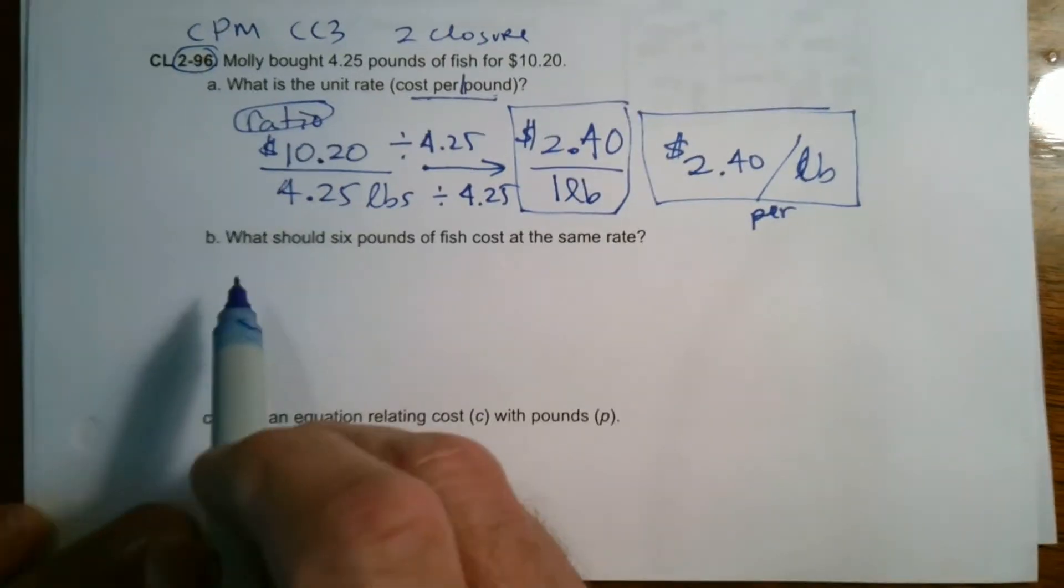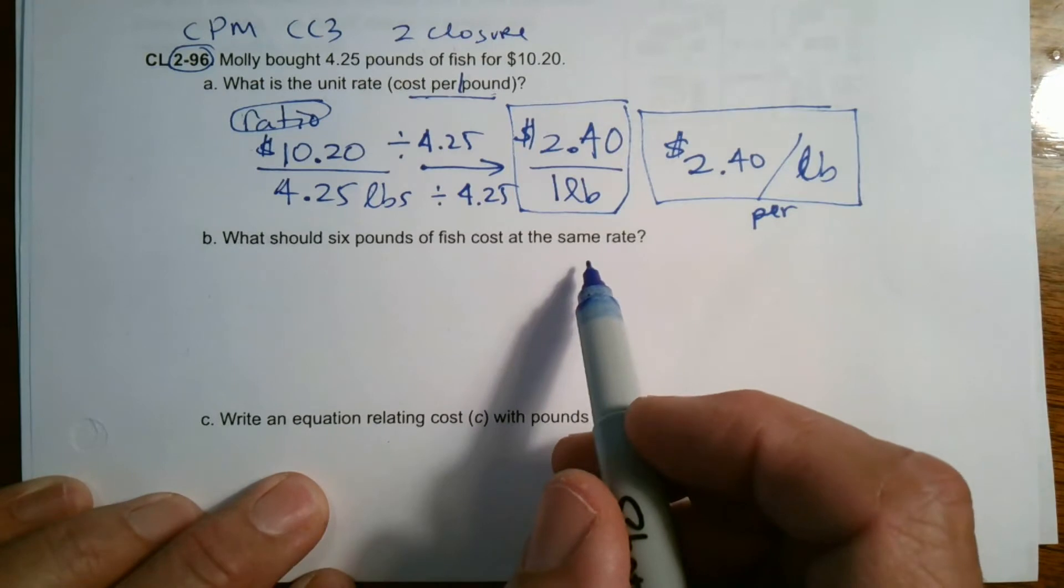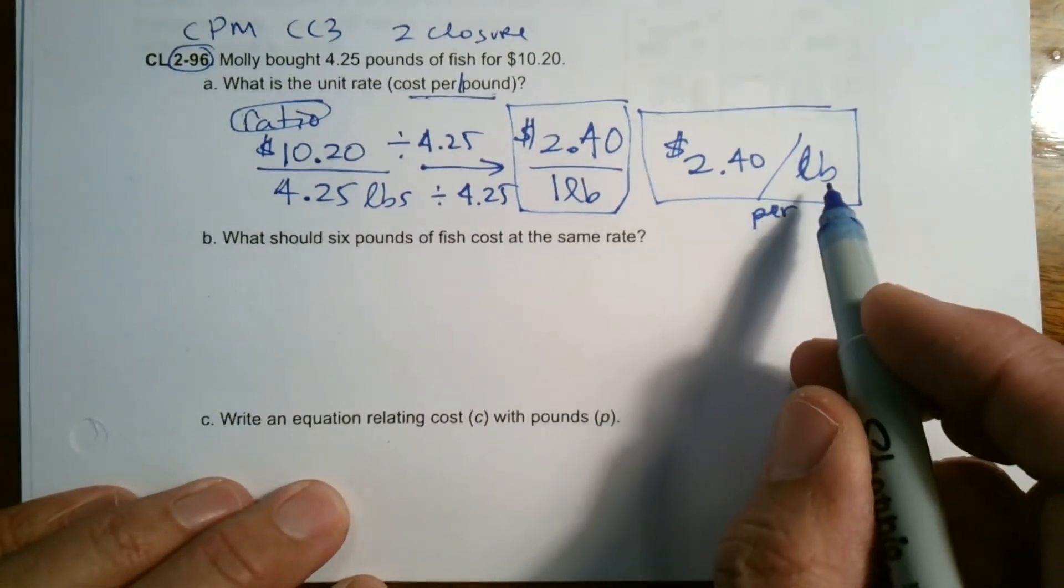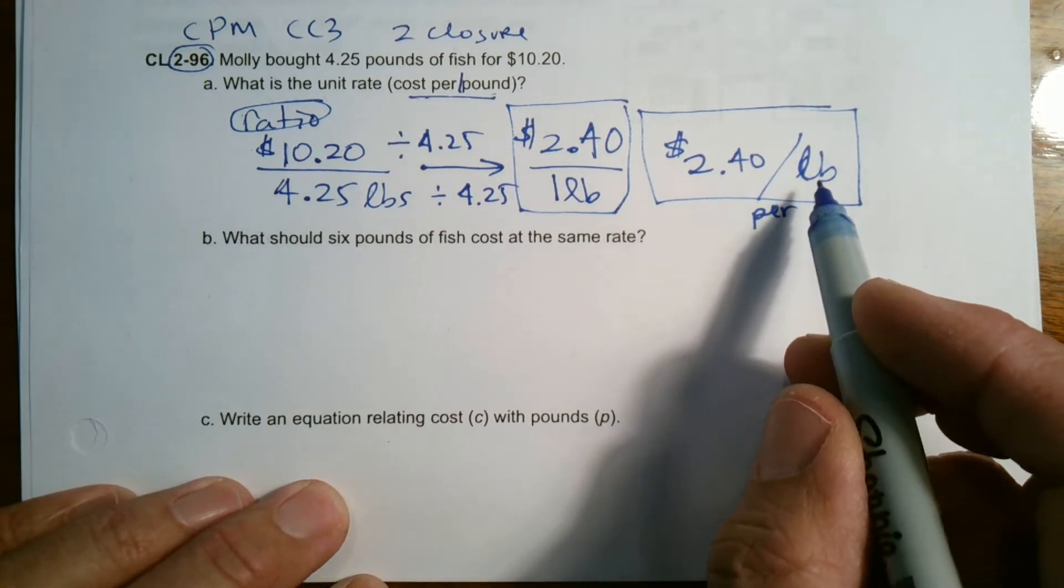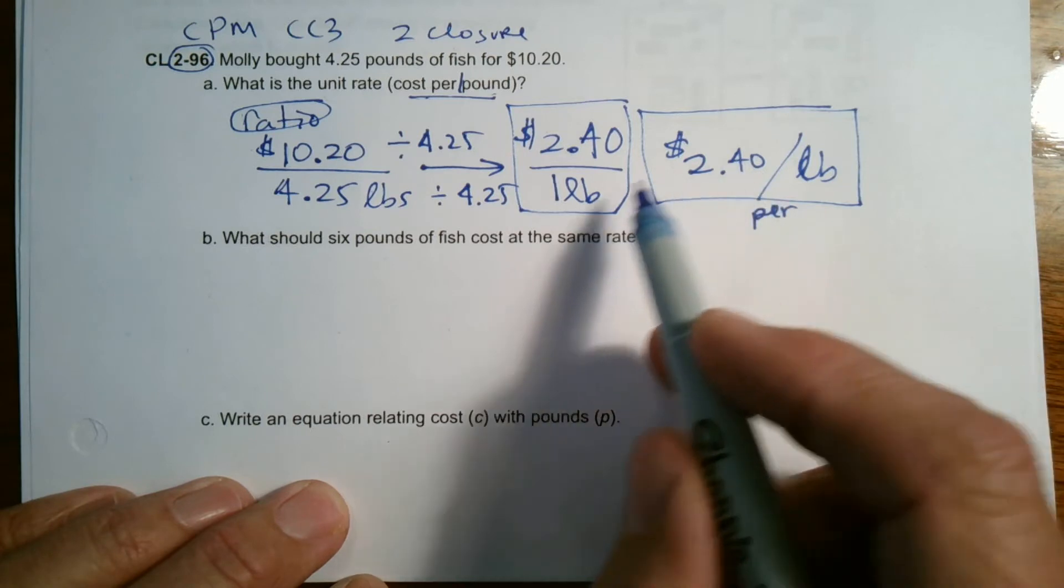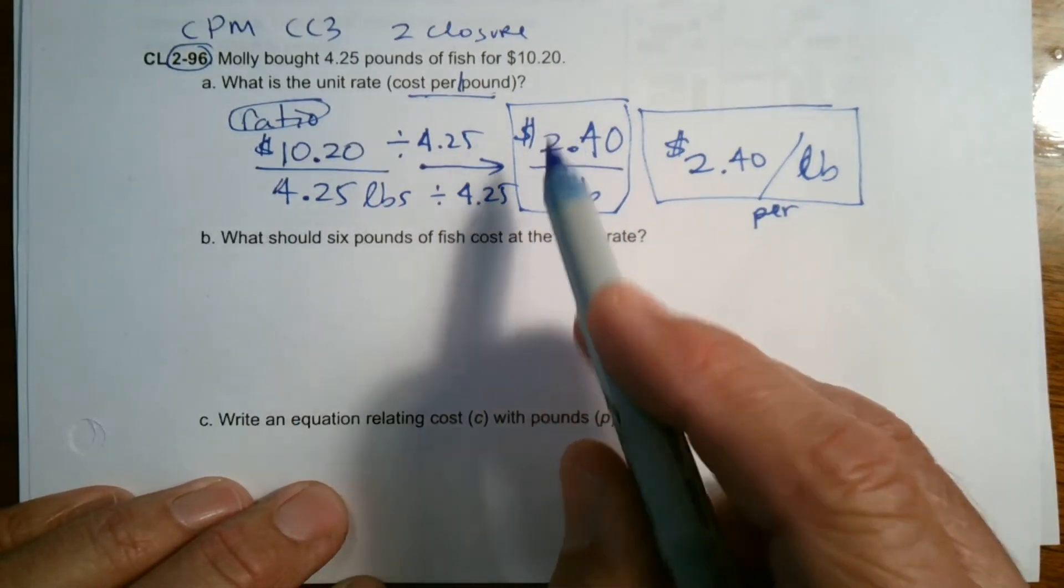All right. So now it says, what should six pounds of fish cost at that same rate? So if it's $2.40 per pound, then I need to take that and multiply it by six to find out how much it's going to cost for six pounds, right? So six pounds.